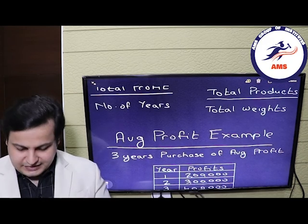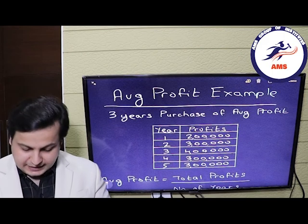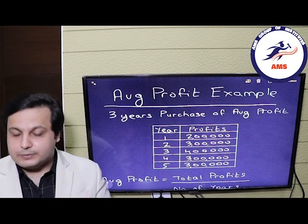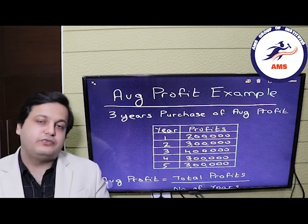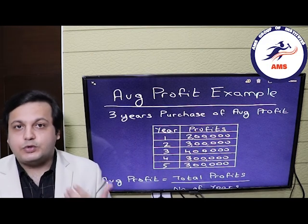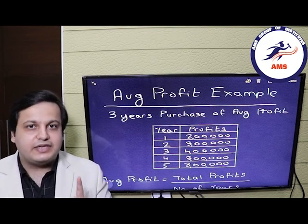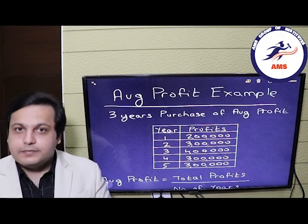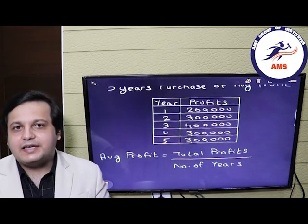Let's take our example. The profits are 2 lakhs, 3 lakhs, 4 lakhs, 3 lakhs, and 3 lakhs. So let's do the total: 2 plus 3 is 5 lakhs, plus 4 lakhs is 9, plus another 3 lakhs comes to 12 lakhs, plus another 3 lakhs. So the total of the profits is 15 lakh rupees.